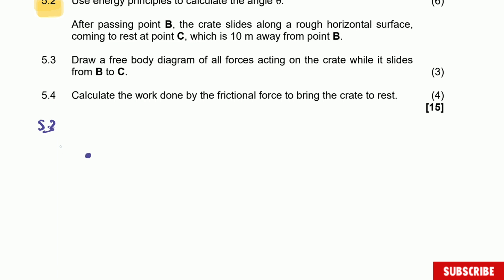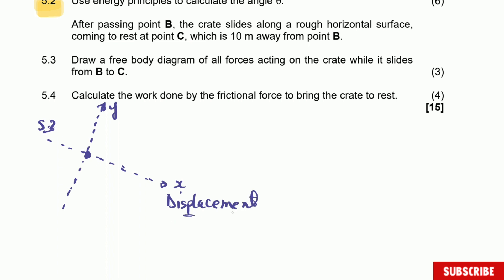Before we do that, let's quickly do the free body diagram. When working with work and energy, it is important to know that the object is moving down — so this is the positive direction and the y-axis is perpendicular to the x-axis. The displacement is along the incline. We need the angle between the displacement and each force. The forces acting on the object are: normal force, frictional force, and weight.